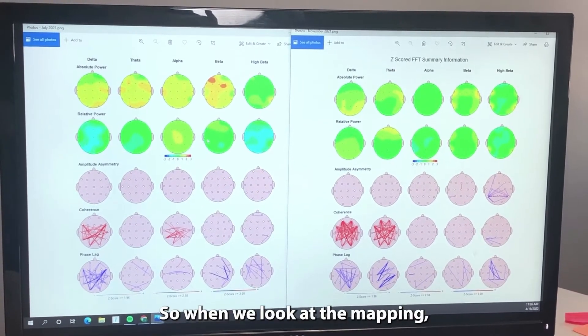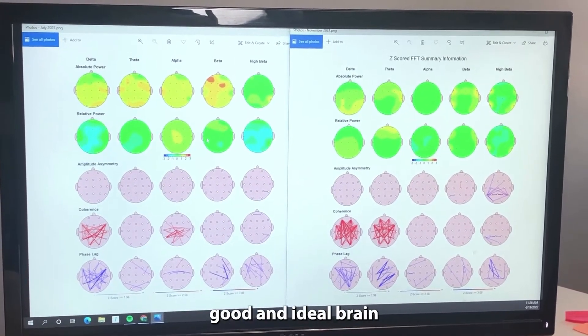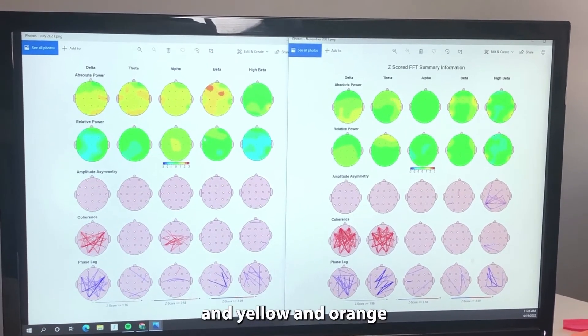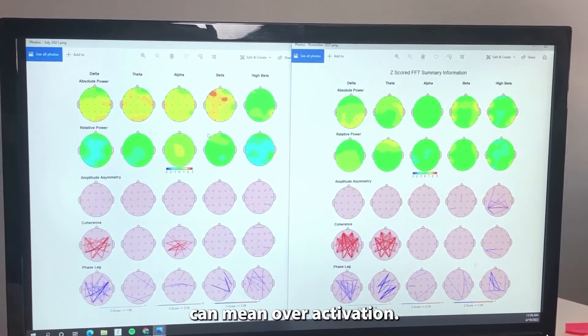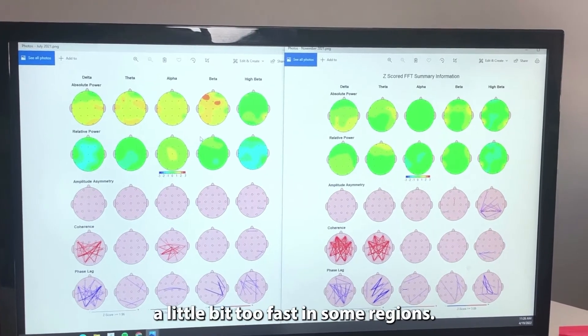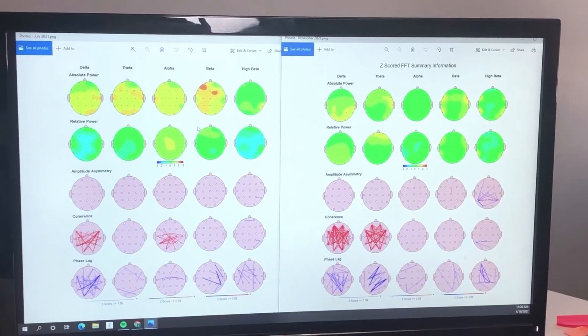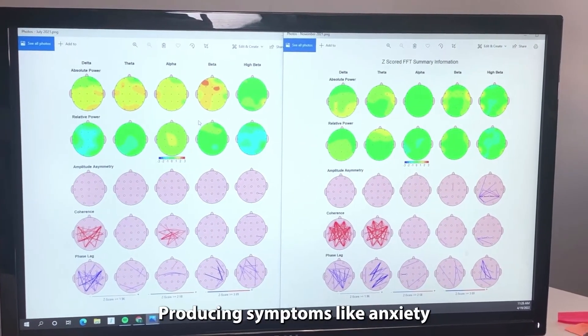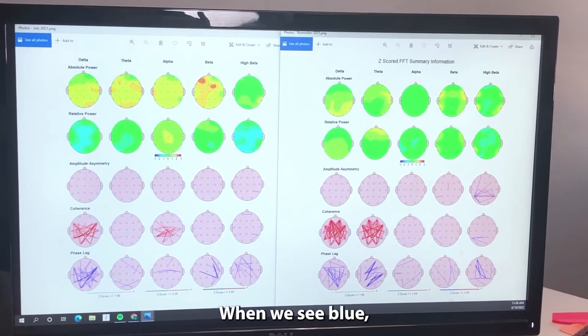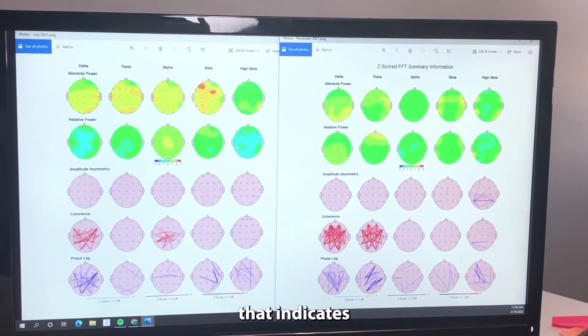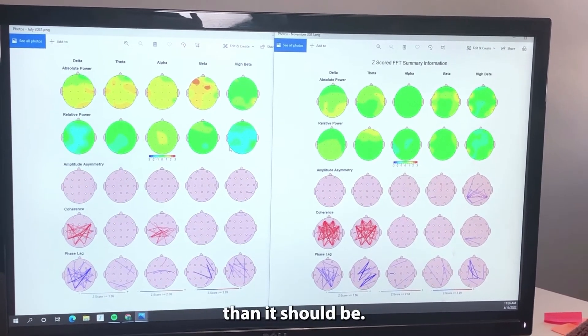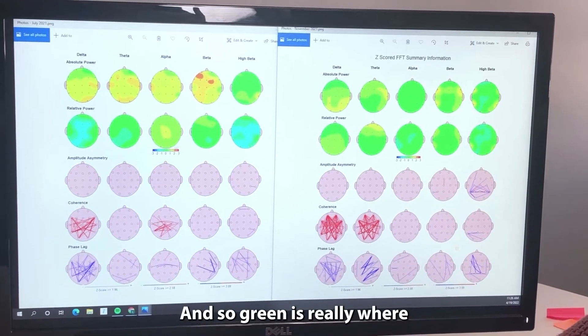So when we look at the mappings, green equals good and ideal brain function, and yellow and orange can mean overactivation, so your brain might be running a little bit too fast in some regions, producing symptoms like anxiety or things like that. When we see blue, that indicates the brain is running a little bit slower than it should be, and so green is really where we want to be.